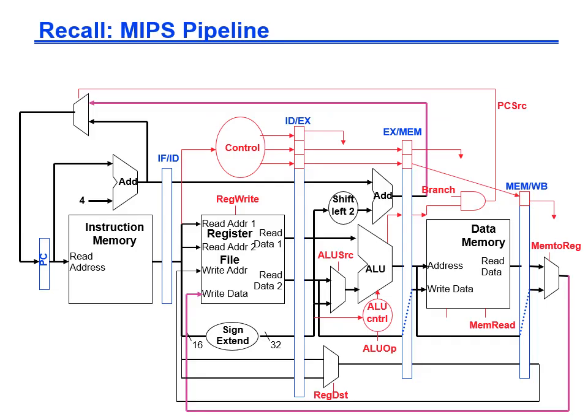Remember that the classical MIPS pipeline consists of five stages named Instruction Fetch, Instruction Decode, Execute, Memory, and Writeback. Between each stage there is a set of inter-stage buffers, which are registers that pass the output of one stage to the input of the next when the clock ticks.